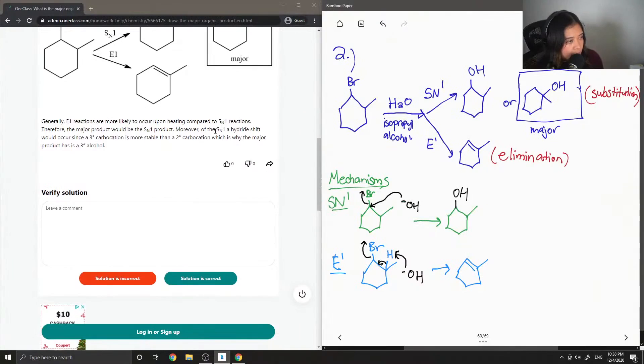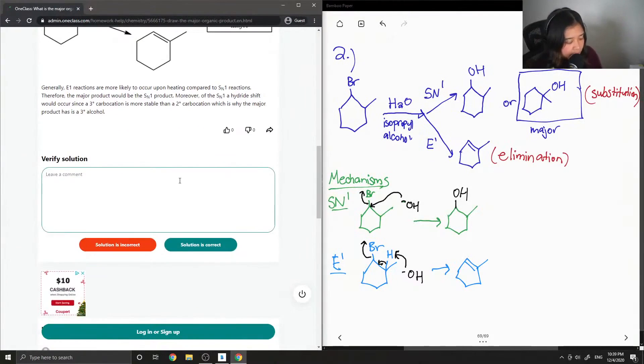Moreover, of the SN1, a hydride shift would occur since a 3 degree carbon carbocation is more stable than a 2 degree, which is why the major product has a 3 degree alcohol. Yep, so this solution is correct.